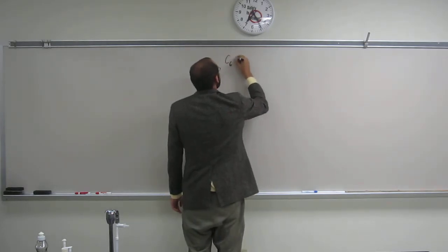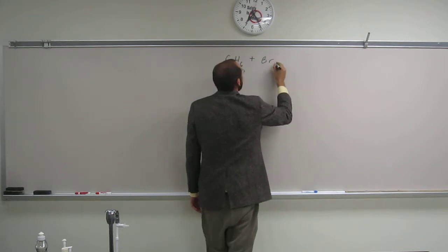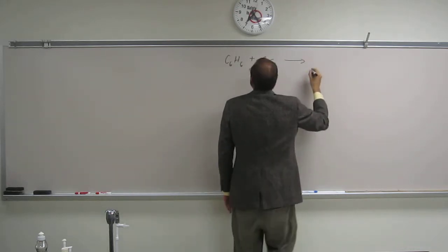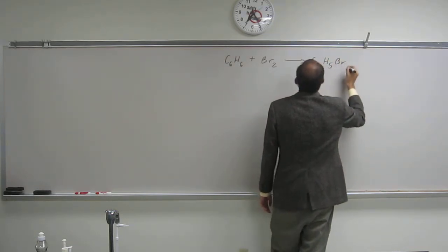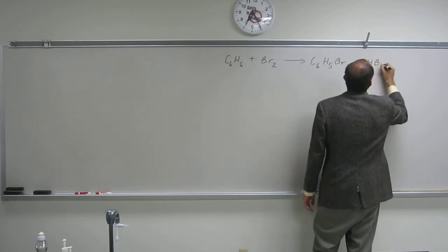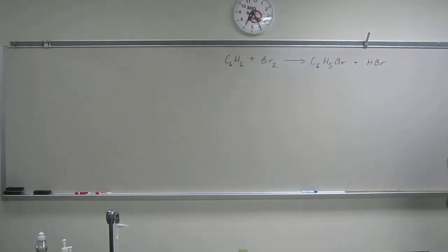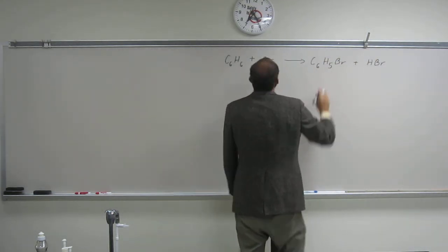So it's C6H6 plus Br2 goes to C6H5Br plus HBr. So this is bromobenzene right here.